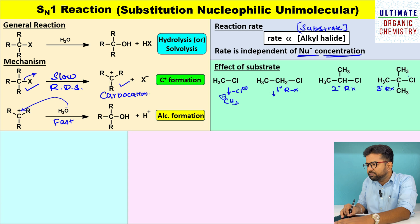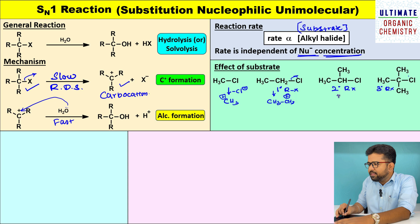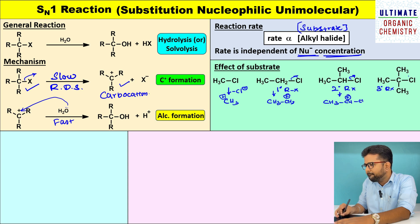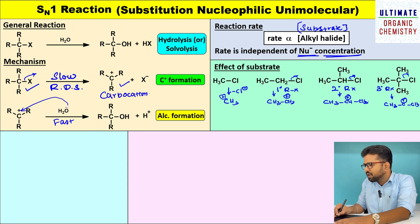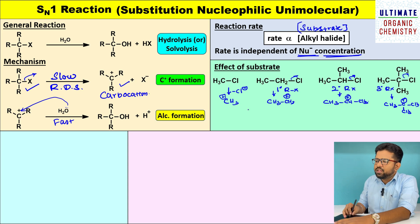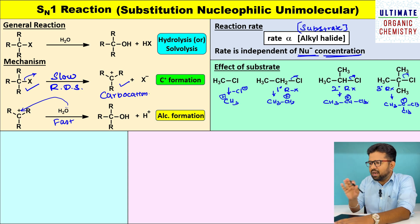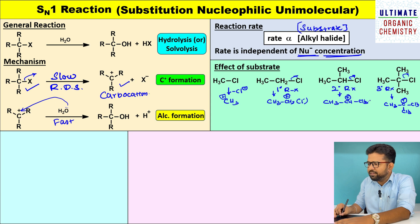In the case of the primary alkyl halide, once Cl minus leaves, it leads to the formation of a primary carbocation. In the case of the secondary alkyl halide, once Cl minus leaves, it forms an isopropyl cation — an example of a secondary carbocation. And once Cl minus leaves from the tertiary alkyl halide, it leads to the formation of a tertiary butyl cation, an example of a tertiary carbocation.